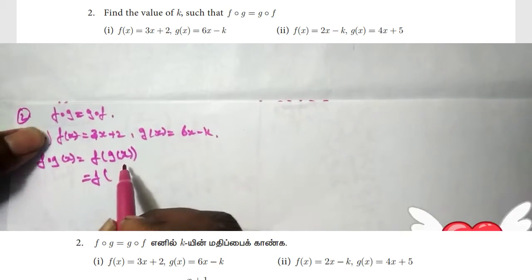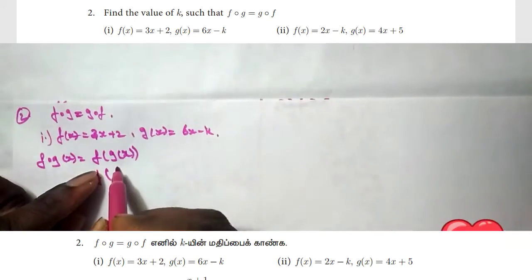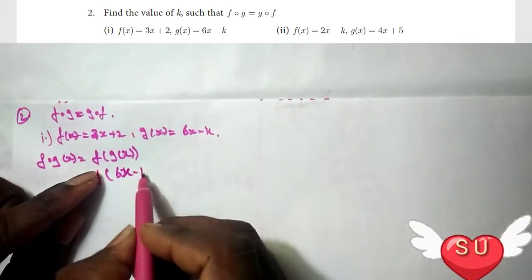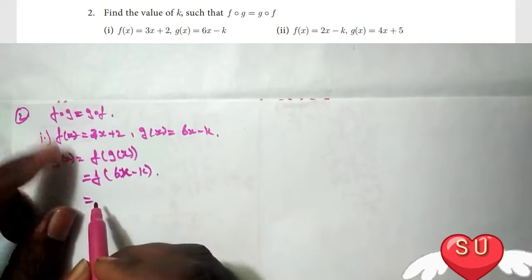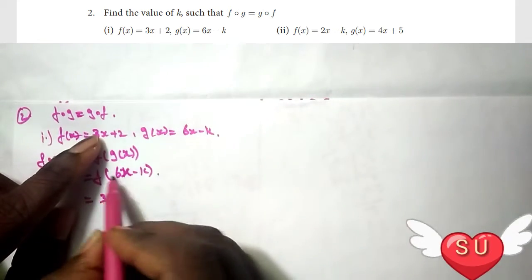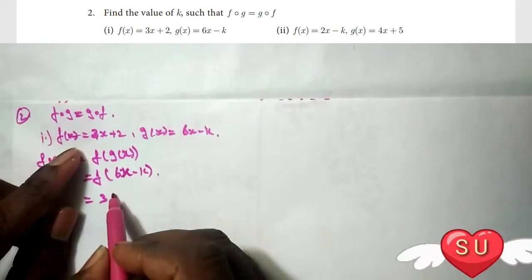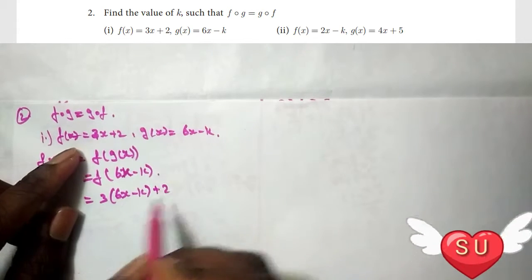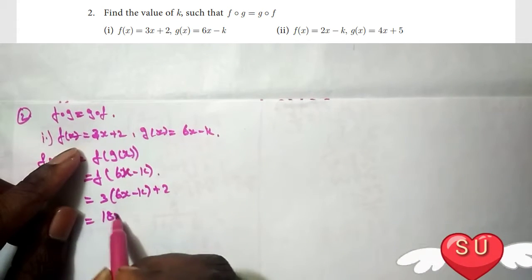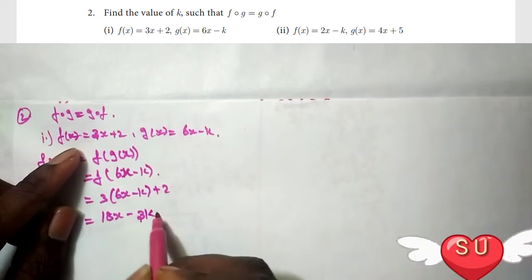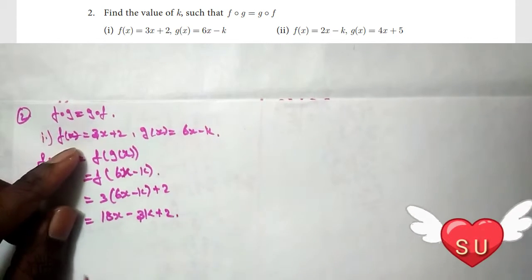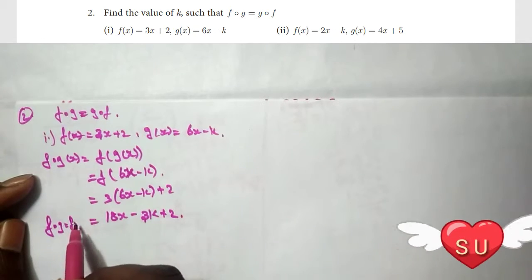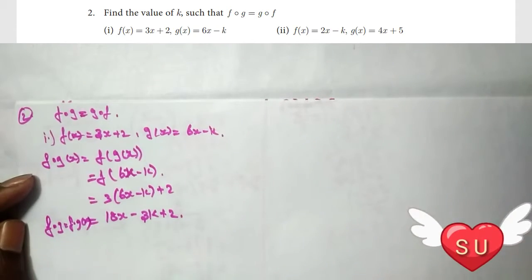f of g of x. Now, the g of x is already 6x minus k. Now, f of x — so, in the bracket — we are going to substitute: 3 times (6x minus k) plus 2, which equals 18x minus 3k plus 2. This is f∘g of x.